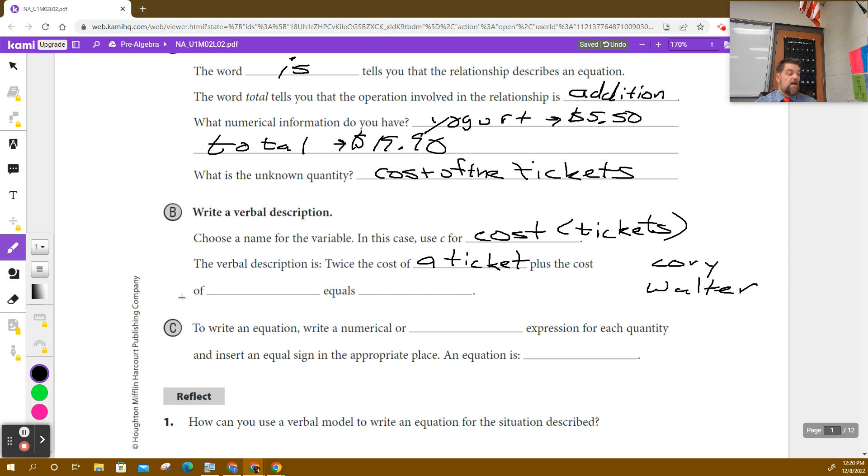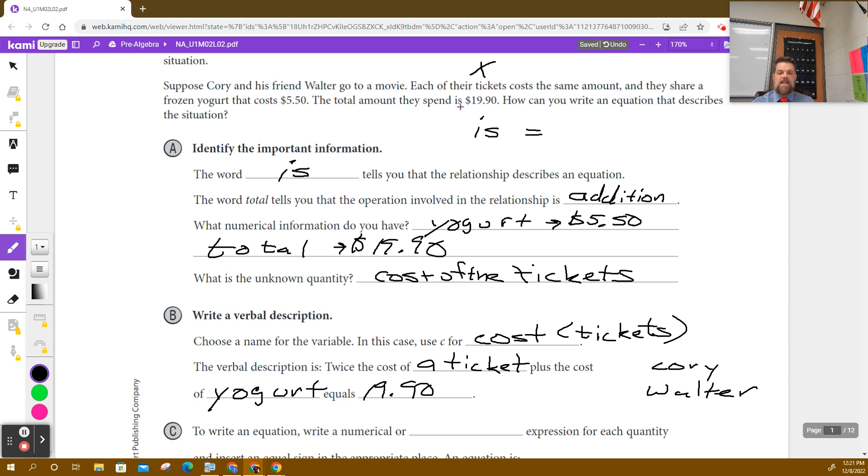Plus the cost of... yep. We're doing this math problem right now. And what does it equal? It equals what? What is the cost of the two tickets that they're having and the yogurt that they're having? What does that equal? Yep, equals $19.90. Because way up here, originally, right before $19.90, it says 'is $19.90.' So that means equals $19.90 is going to be somewhere.